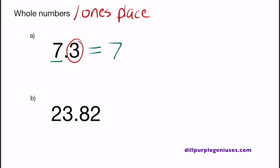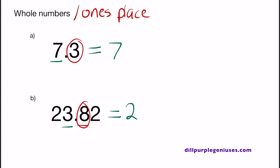Let's look at B. You have 23.82. Let's identify the ones place. In this case, 3 is in the ones place. To the right of that is 8. Any number that is to the left of the number you're trying to round up or down has to stay the same, so whatever the whole number is, it should be in the twenties. Now let's look at 8. 8 is greater than 5, which means this decimal needs to be rounded up. So instead of 3, we need to turn it into 4. When you round up this number, you should come up with 24.